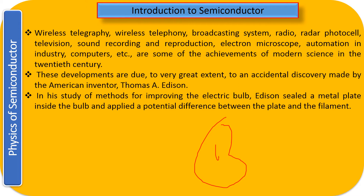So here you have a bulb as usual, and inside you have the filament. Parallel to this filament he put a metal plate, and then he applied a potential difference between the filament and the plate. This plate was sealed along with the bulb. Let us see what his observation was and how this observation led to electronics.